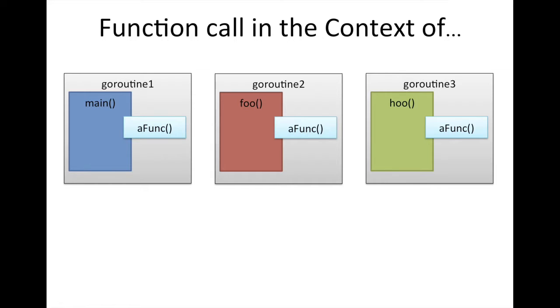Same thing, when aFunc is called by foo, foo is the caller of aFunc, and because foo is inside the context of goroutine2, aFunc at that time, that invocation of aFunc, is in the context of goroutine2. Now, this might make your head hurt a little bit, because you're thinking: is aFunc in multiple contexts? Yes, because it's being called by multiple callers.